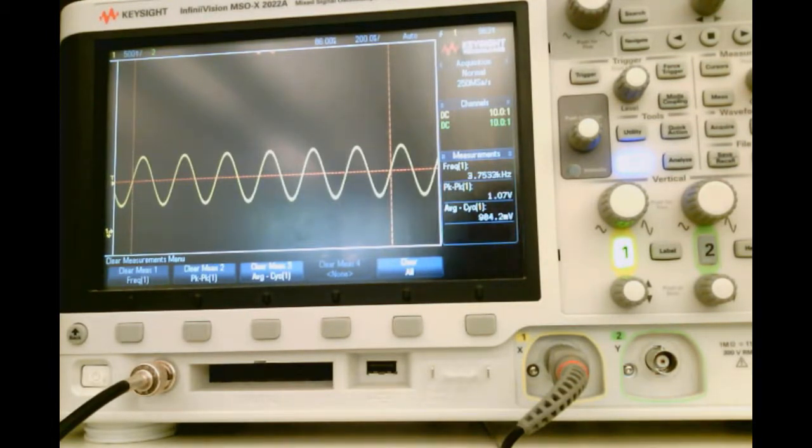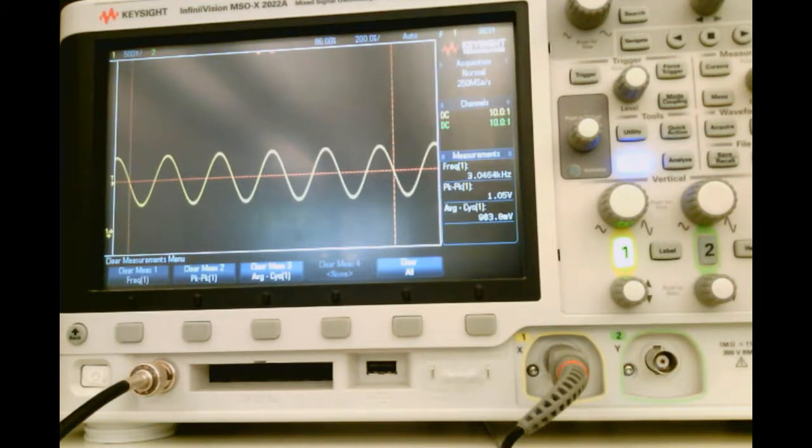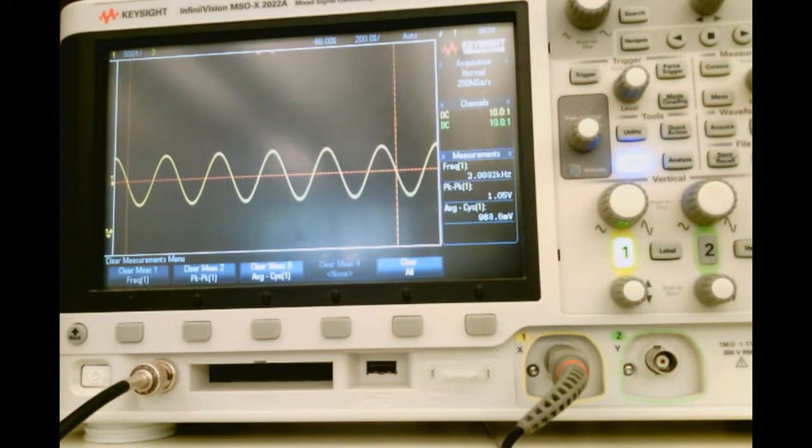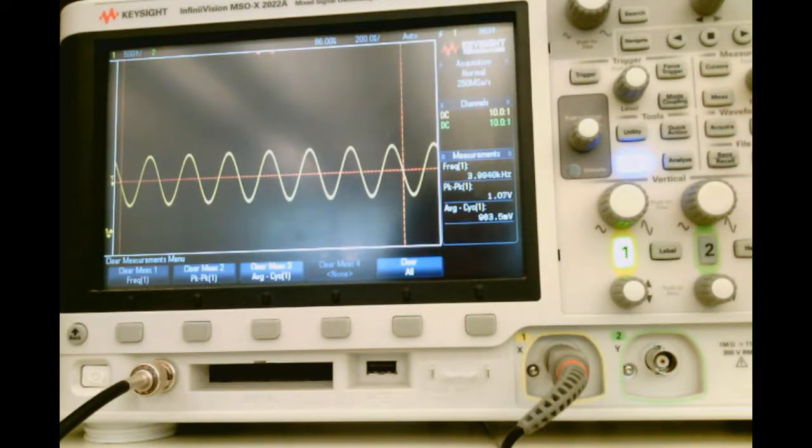I can change my frequency on my function generator, I'm going to change it to 4 kHz. There it is, 4 kHz, and as you can see, it is reflected on the scope.